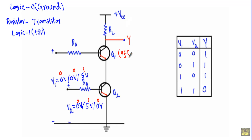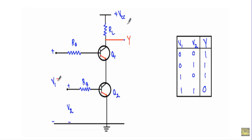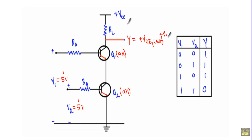In those three cases, transistors Q1 and Q2 will be in the off state. As a result, there will be no current flow through the load resistor RL, and therefore no voltage drop across it. In that case, the output will be equal to VCC, or logic one. But if I apply five volts at both input terminals — logic one-one — transistors Q1 and Q2 will both be in the on state, and the output voltage will equal VCE1(sat) plus VCE2(sat).